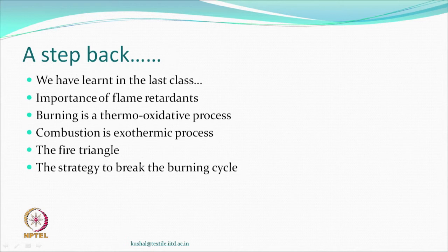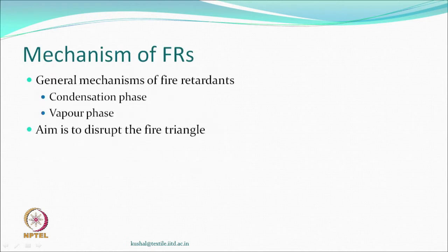Combustion is an exothermic process and heat is released during it. We also learned about the fire triangle: the polymer burns, produces flammable products, they react with oxygen, and heat is released. We discussed strategies to break this fire triangle. Generally, there are two basic mechanisms: one is called the solid phase or condensation phase mechanism, and the other is the vapor phase mechanism. The aim of any flame retardant compound is to somehow disrupt this fire triangle.